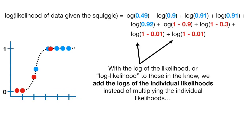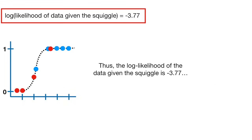Thus, the log likelihood of the data given the squiggle is negative 3.77.